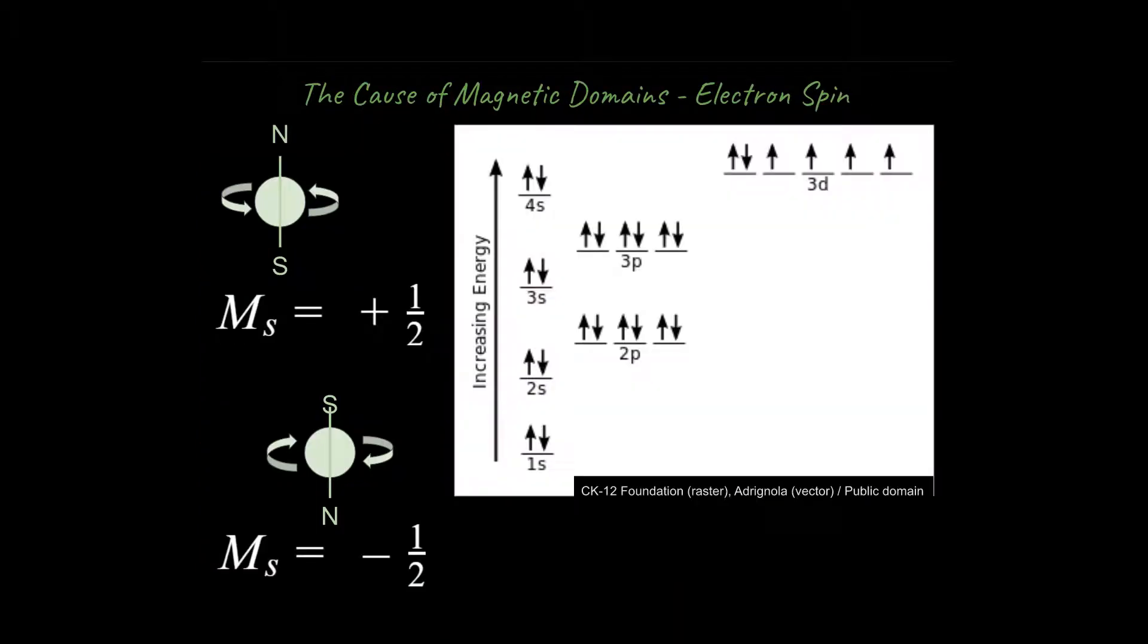All right, let's talk briefly about the cause of magnetic domains. So there's a property of electrons found in atoms, and that is their spin. So it's kind of like you can imagine a spinning top spinning in one direction or another, although everything with quantum physics on the level of chemistry actually gets really complex. So the model isn't perfect.